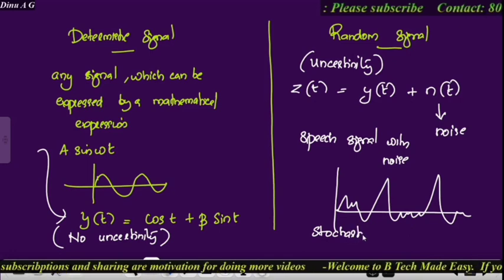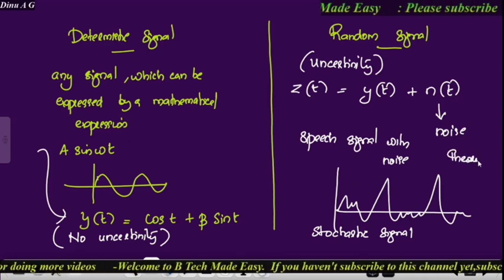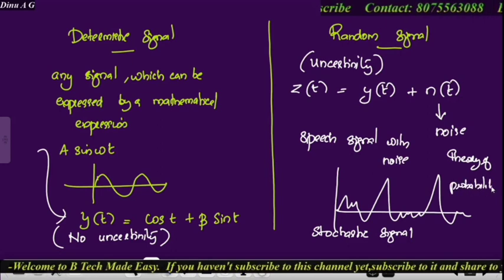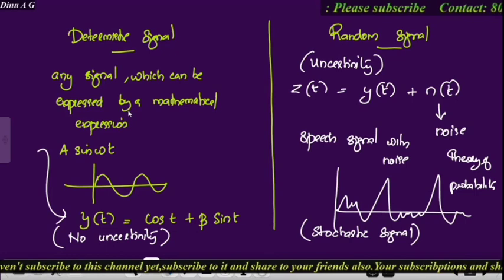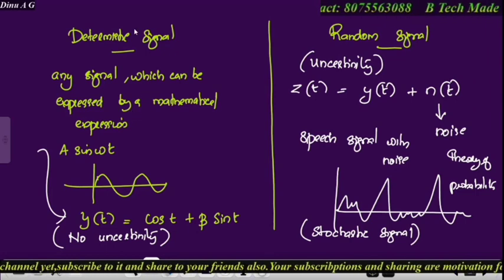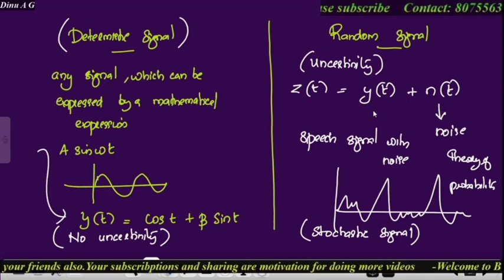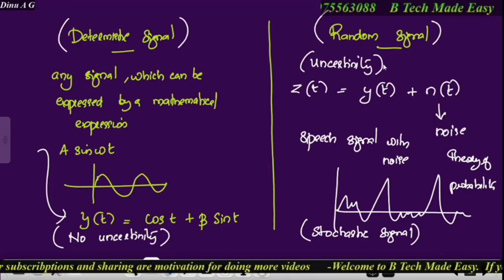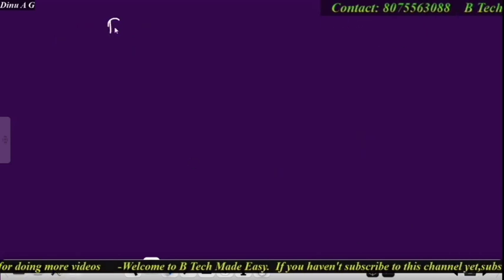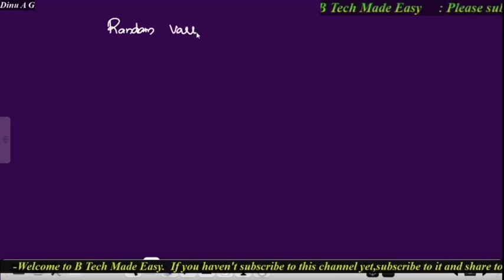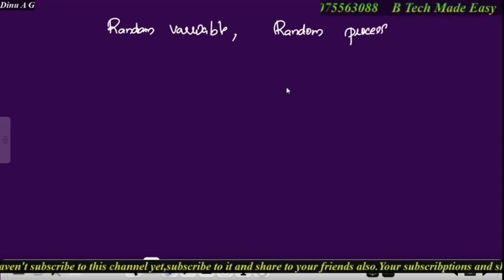A random signal is analyzed based on the theory of probability and is also called a stochastic signal. Associated with this are two important concepts: random variable and random process.